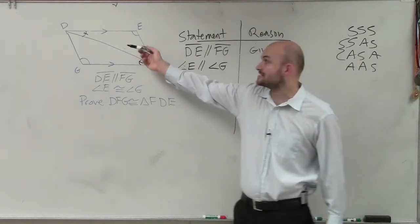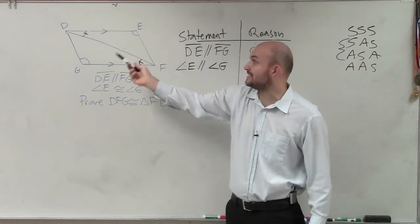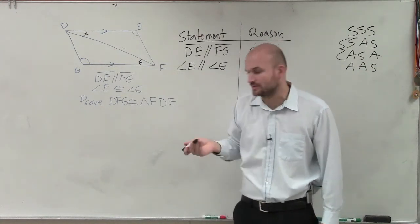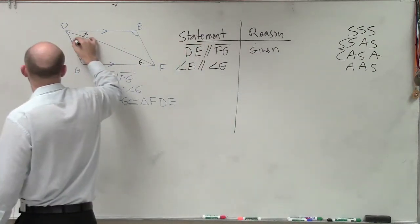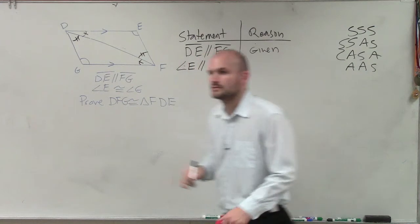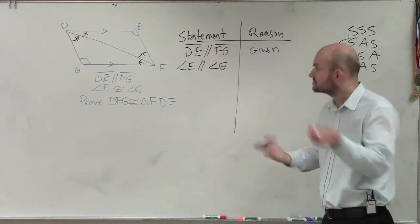It's not going to be exterior, because exterior would be outside of the parallel lines. Interior between the parallel lines, and they're on alternating sides of the transversal. So then, Nick, what definition would I say that these two angles are equal to each other? Alternate interior. Alternate interior as well, right?